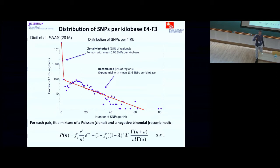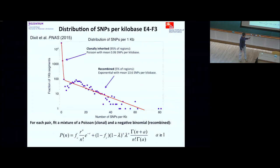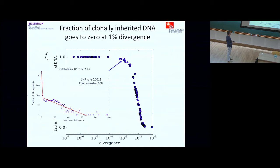We decided to fit those distributions with a mixture: if mutations occur at a fixed rate, the number of SNPs per block would be Poisson distributed. So the ancestral part — still coming from their common ancestor — we assume follows a Poisson distribution. The recombined part we assume follows a negative binomial distribution, which you can think of as a mixture of Poissons with different rates, because they come from different E. coli at different distances.